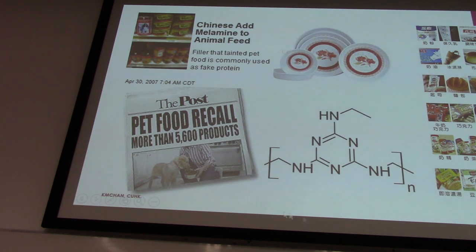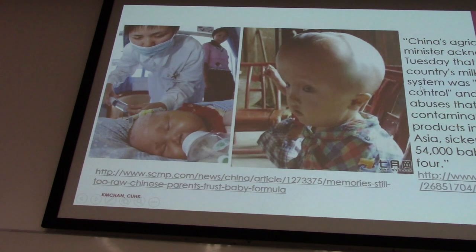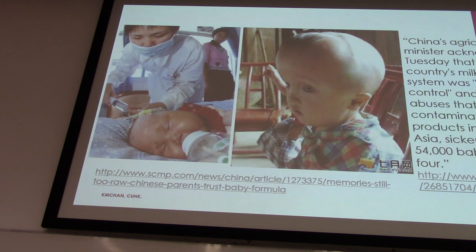Many of those pets had to be sent to the veterinary school to clean up their kidneys — they all had kidney problems. And then later on, this became a big story because melamine was used in meal products for human consumption as well, which almost caused the collapse of an industry.